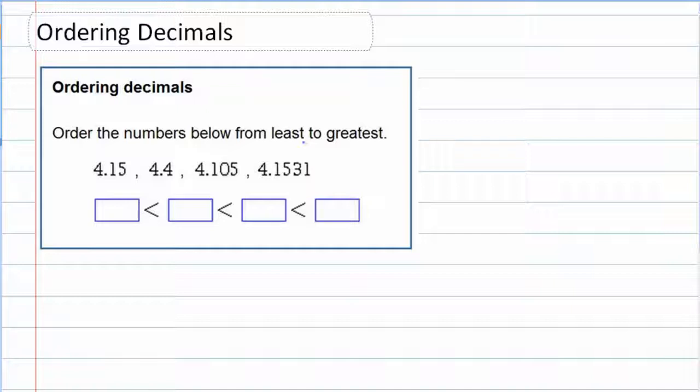What we want to do is compare place value by place value. In this question, we're asked to order the numbers from least to greatest, so I need to find the smallest one first and then progressively have them get bigger. To do that, I want to line them up carefully, lining up place value by place value. I'm putting the decimals right above and below each other, and I'm putting the decimal places behind them directly above and below each other.